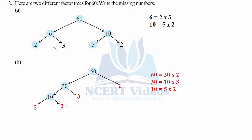Question 2: Here are two different factor trees for 60 — find the missing numbers. For the first tree, 60 is written as 6 × 10; 6 is 2 × 3, and 10 is 5 × 2. For the second tree, 60 is 30 × 2; 30 is 10 × 3, and 10 is 5 × 2. That was question 2.